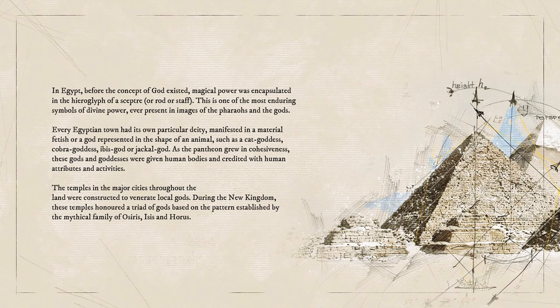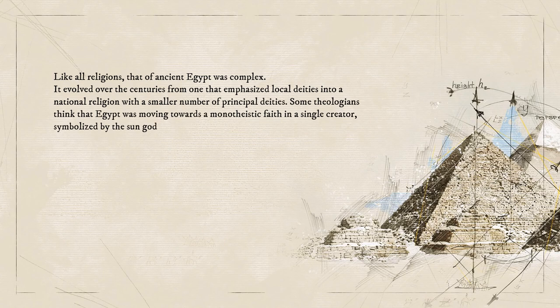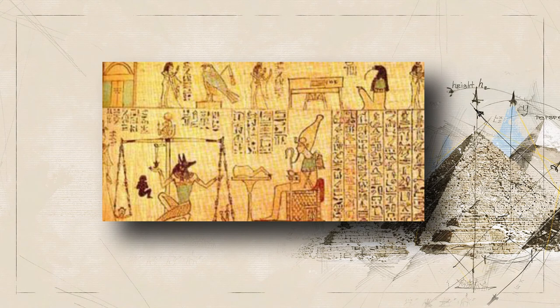During the New Kingdom, these temples honored a triad of gods based on the pattern established by the mythical family of Osiris, Isis, and Horus. Like all religion, that of ancient Egypt was complex. It evolved over the centuries from one that established local deities into a national religion with a smaller number of principal deities. Some theologians think that Egypt was moving towards a monotheistic faith in a single creator, symbolized by the sun god. There was no single belief system, but the Egyptians shared a common understanding about the creation of the world and the possibility of reverting chaos if the destructive forces of the universe were unleashed.